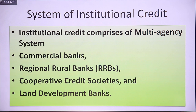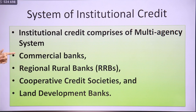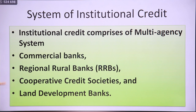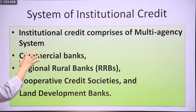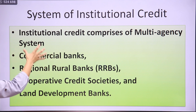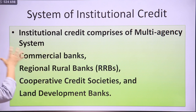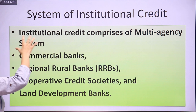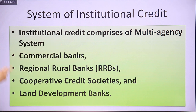The system of institutional credit comprises a multi-agency system including commercial banks, RRBs, cooperative credit societies, and land development banks — these are four important components. If a question asks about components of institutional credit or the type of institutional credit system in India, these four can be written and explained in detail.